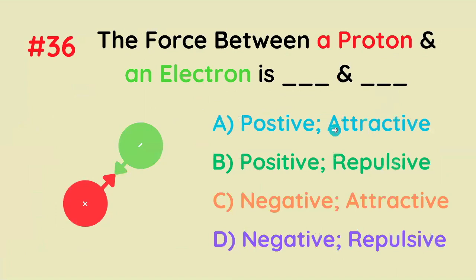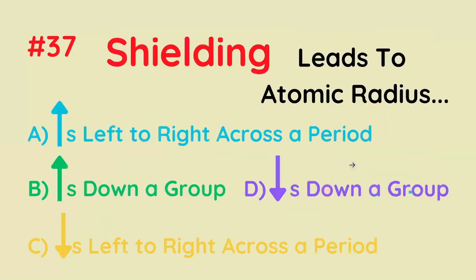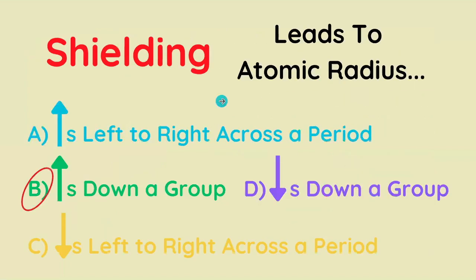The force between a proton and electron is positive or negative, attractive or repulsive? It's going to be negative and attractive. Shielding leads to atomic radius doing what? It's going to increase down a group, because we're adding shells of electrons, so there's more repulsion of the outermost electron gaining access to the nucleus.